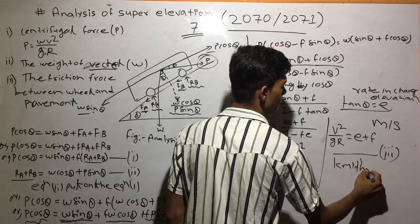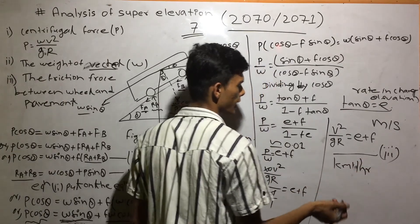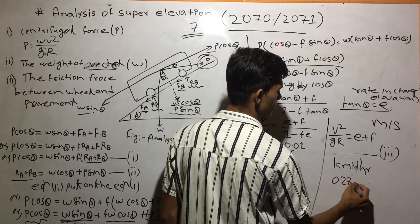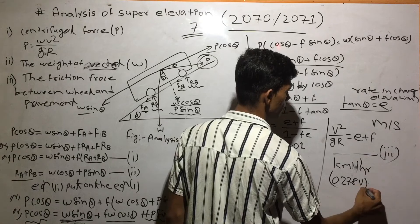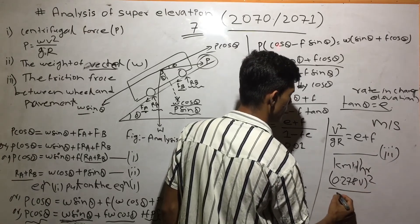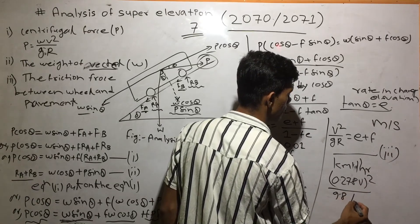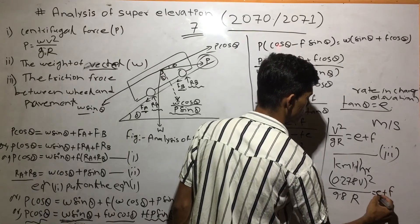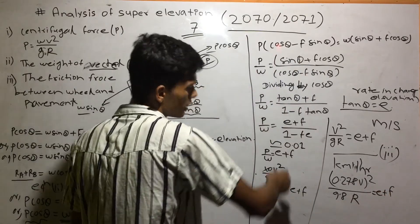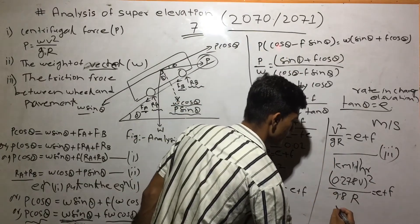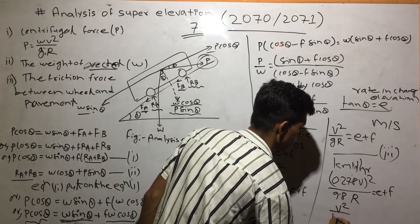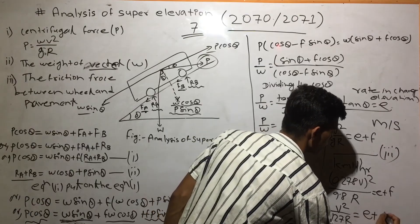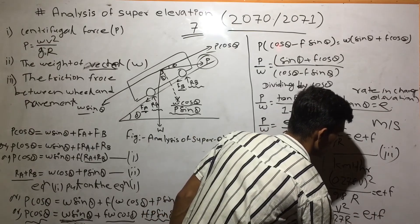So: 0.278 V² divided by 9.8 times R equals e plus f. Therefore V² divided by 127R is equal to e plus f.